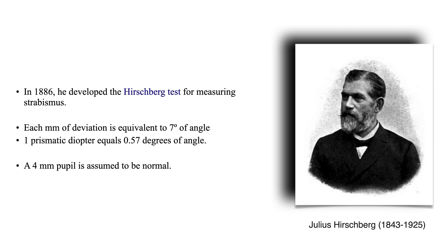Hirschberg calculated that each millimeter of deviation from the center of the cornea towards the temporal or nasal side corresponds to approximately 7 degrees, and about double when measured in prismatic diopters. A 4 mm pupil is assumed to be normal.